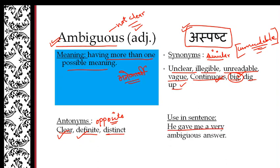Use it in a sentence. He gave me an ambiguous answer. I have asked someone and they have given me an unclear answer. So we will say he gave me a very ambiguous answer. Okay, if you can write this for an example, you can write this.